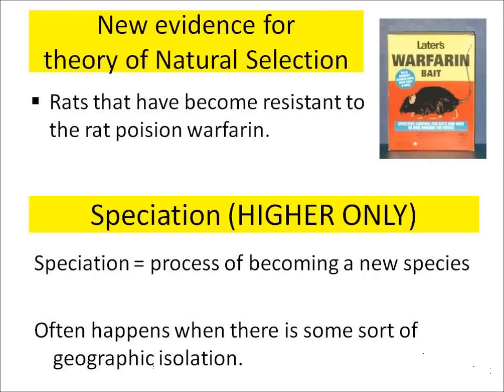You also need to know that new evidence comes up which supports the theory of natural selection. For instance, some rats have become resistant to a rat poison called warfarin. The fact that some of these rats have become resistant to the rat poison is evidence of natural selection.